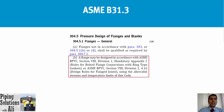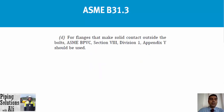Going back to paragraph 304.5.1 of ASME B31.3, two options are specified as alternatives for pressure design of flanges instead of using listed components. Based on 304.5.1(b), a flange may be designed in accordance with ASME Boiler and Pressure Vessel Code Section 8, Division 1, Mandatory Appendix 2, or ASME BPVC Section 8, Division 2, clause 4.16, using the allowable stresses and temperature limits of that code. Based on 304.5.1(d), for flanges that make solid contact outside the bolts, ASME BPVC Section 8, Division 1, Appendix Y should be used. These alternative references reveal that pressure design of flanges could be complicated without referring to listed components in Table 326.1.